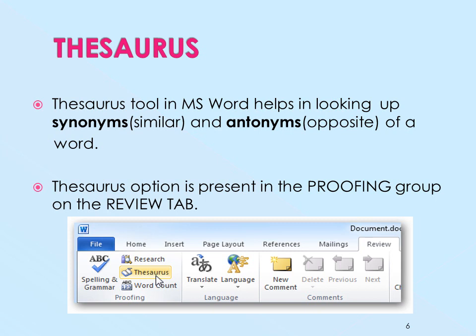Next tool is the thesaurus tool. The thesaurus tool in MS Word helps you look up synonyms, that is similar words, and antonyms, that means opposite words, of a selected word. The thesaurus option is present in the proofing group on the review tab. As you can see in the image, the review tab is opened, and inside it you have the proofing group, within which you can see the thesaurus option.